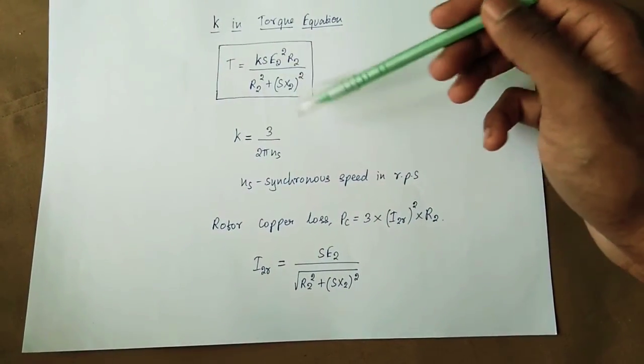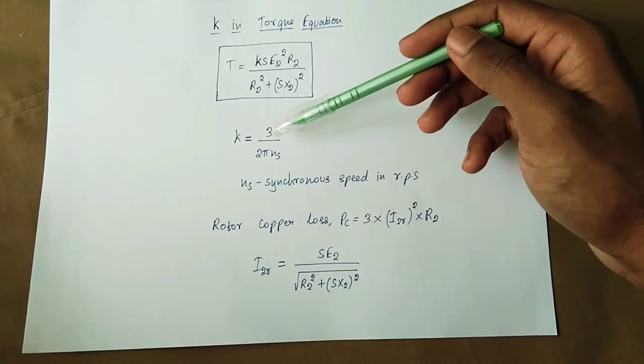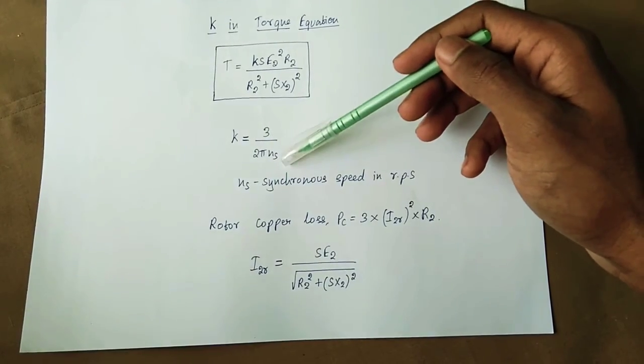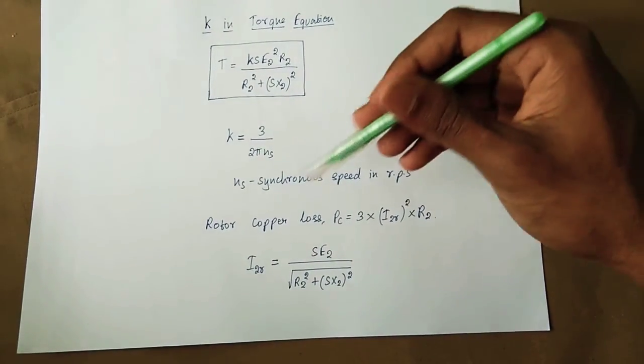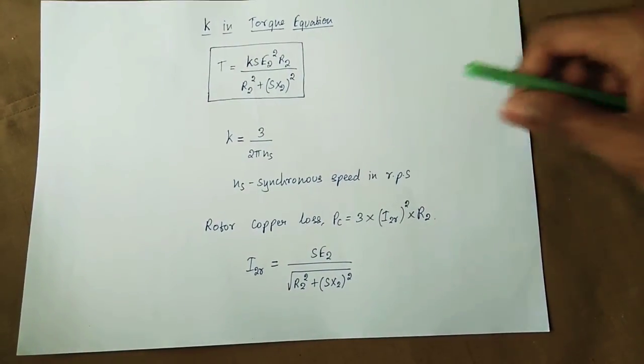If we look at the value of k, k is equal to 3 divided by 2π·Ns, where Ns is the synchronous speed in rps.